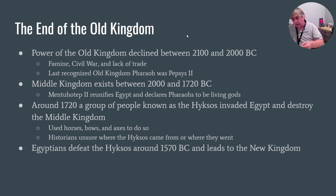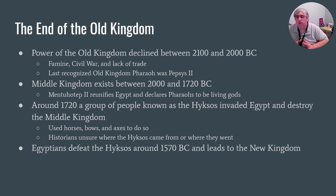Eventually the Old Kingdom will end — there's civil war and a lack of food — and the Middle Kingdom is going to be kind of a transition. From about 2000 to 1720 BC, the Middle Kingdom exists. Not a whole lot to know about it, other than it's Mentuhotep II who is the founder of the Middle Kingdom and who declares that pharaohs are a living god. The Middle Kingdom ends in 1720 because a group of people known as the Hyksos invade. We don't know where the Hyksos came from, we don't know much about their origins, and we also don't know what ultimately happens to them.